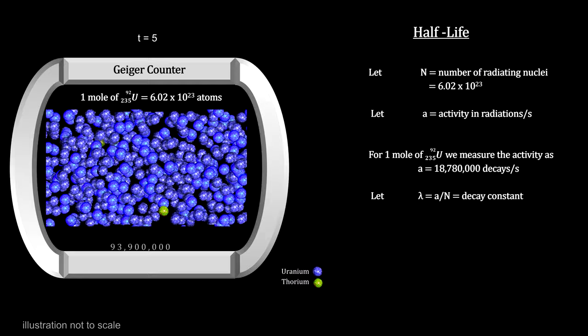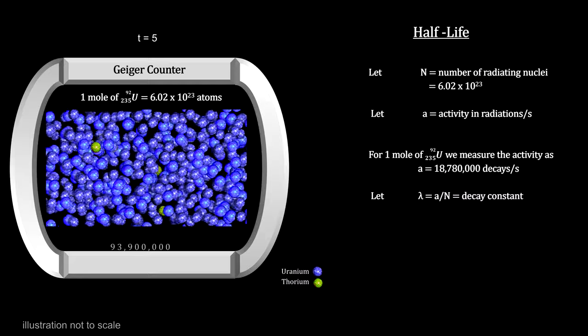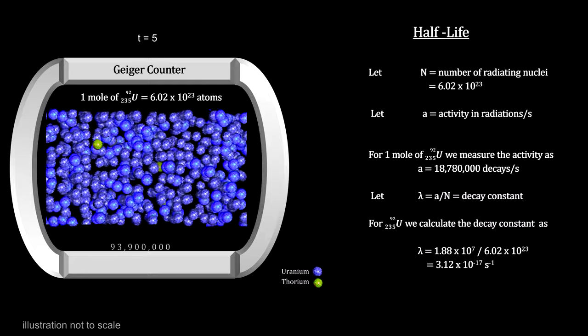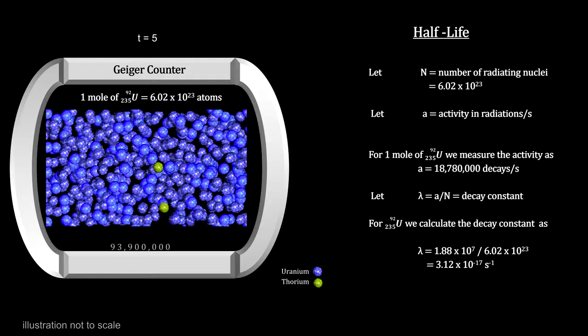We find that the decay constant is always a small number, constant over time, and different for different materials. Here we have the decay constant for uranium-235.